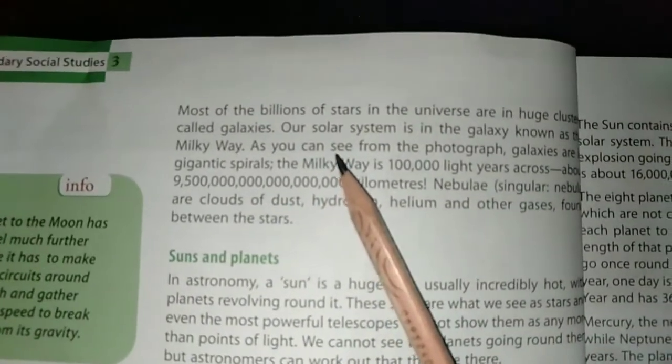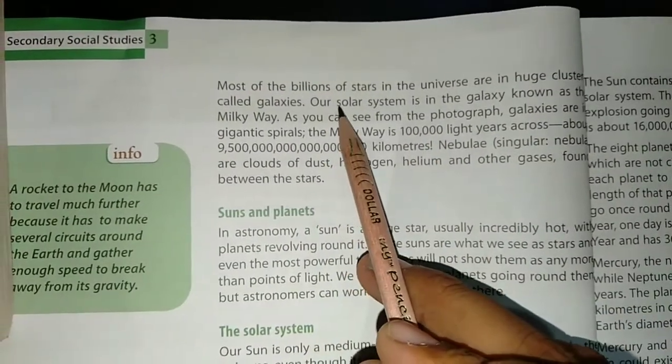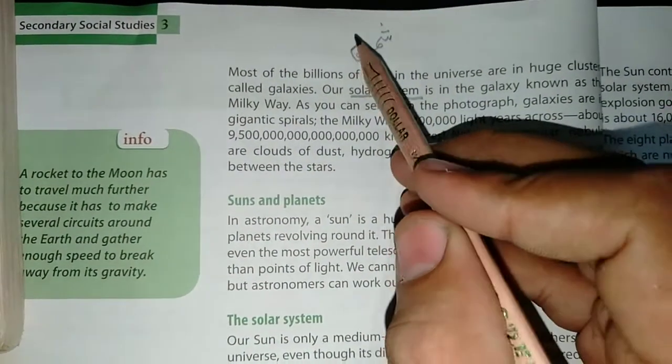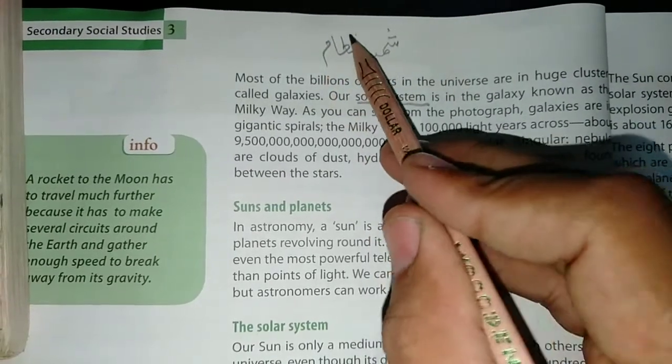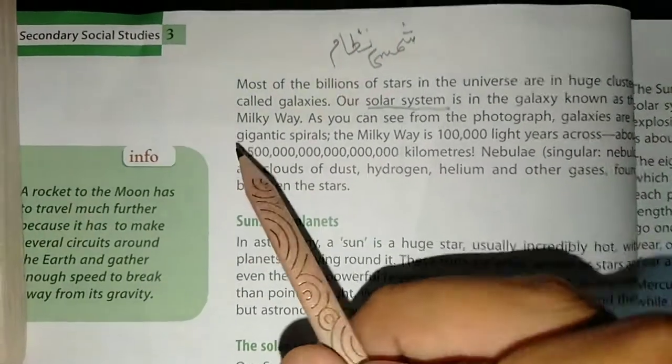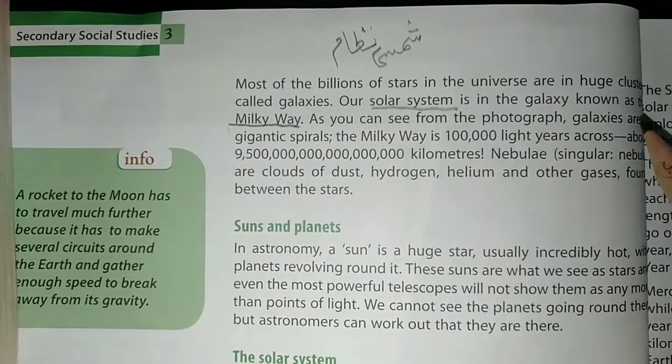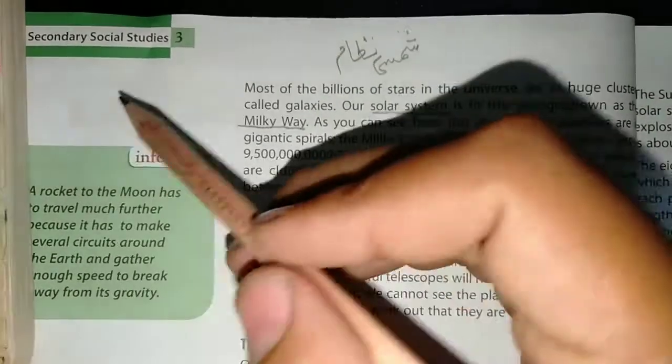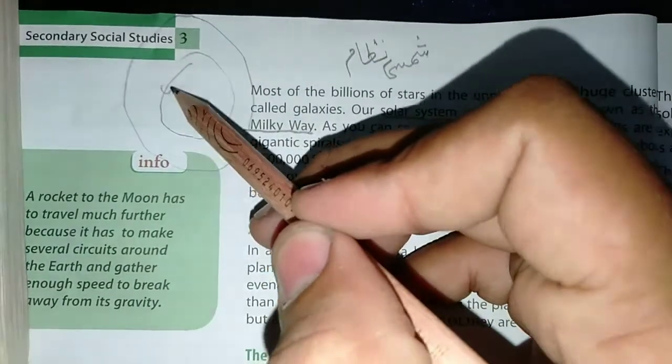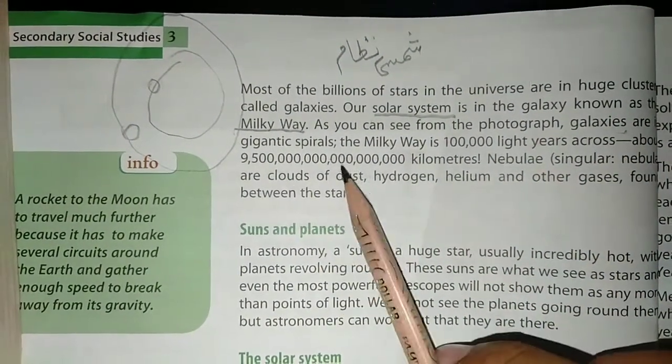Our solar system is in the galaxy, also called the Milky Way. As you can see from the photograph, galaxies are gigantic spirals in which planets move. These are big spirals, gigantic spirals.